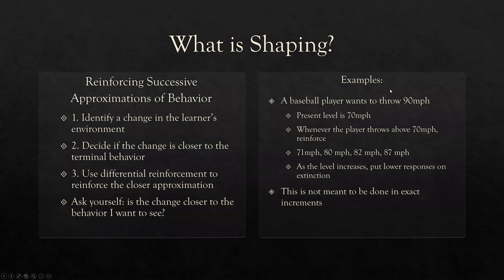So what is shaping? Shaping is reinforcing approximations of behavior — the different steps towards a terminal final behavior. First, we need to identify a change in the learner's environment. We need to closely observe the client and look for any incremental change that we can reinforce. Second, decide if it's closer to the terminal behavior. Third, use differential reinforcement to reinforce the closer approximation. If it isn't closer, we put it on extinction. You're always asking yourself: is the change closer to the behavior I want to see?